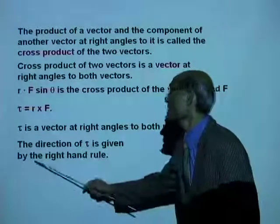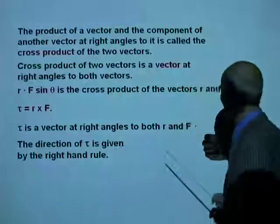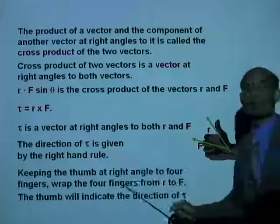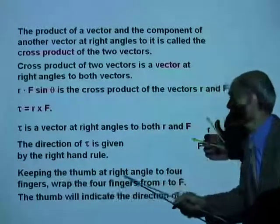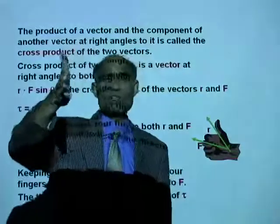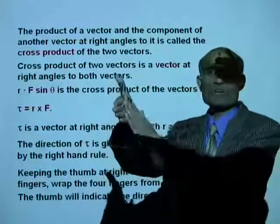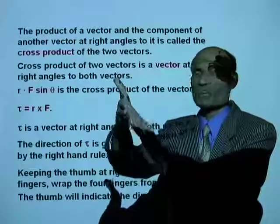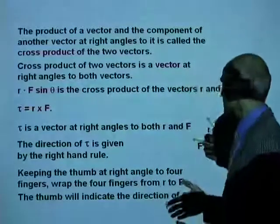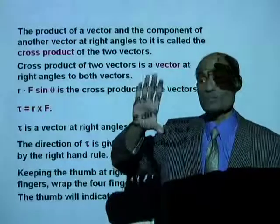The direction of tau is given by the right-hand rule. The right-hand rule says: keeping the thumb at right angles to the four fingers — these are the four fingers and the thumb is at right angles — keep the four fingers with the thumb at right angles, then wrap the four fingers from R to F.